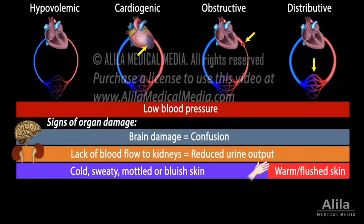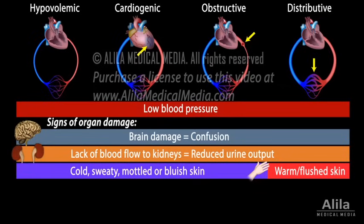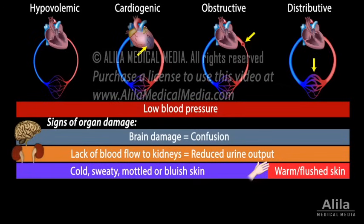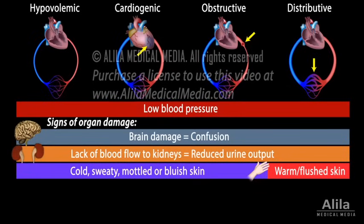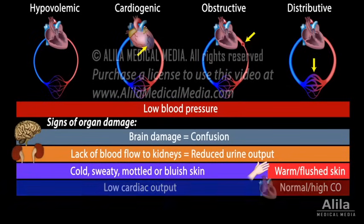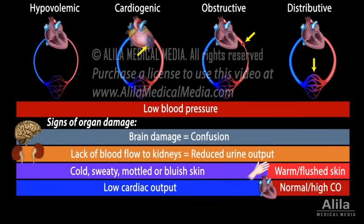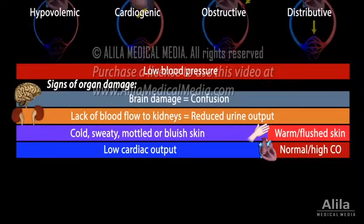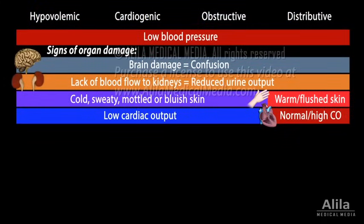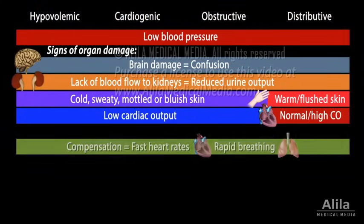Distributive shocks may also differ from other types of shock by having, at least initially, normal or high cardiac output. As the body tries to compensate for hypotension, fast heart rates and rapid breathing may be observed.